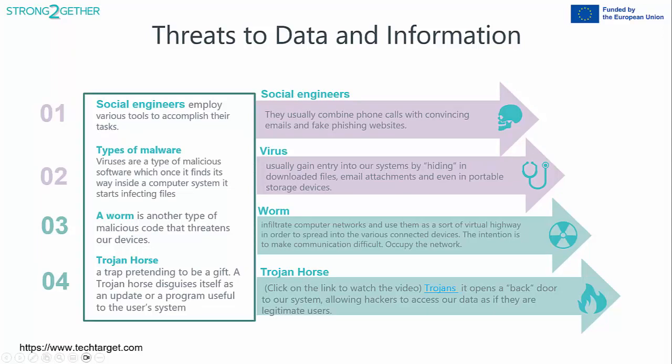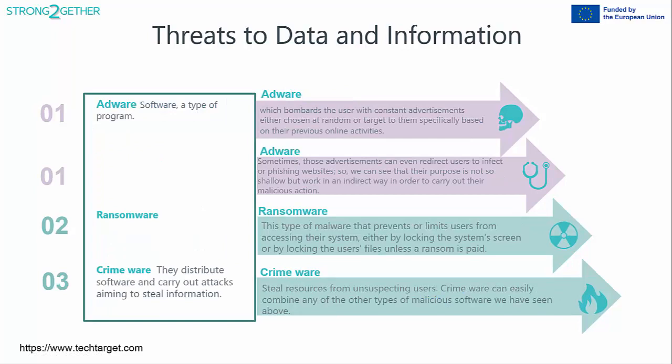Social engineers combine phone calls with convincing emails and fake phishing websites. Types of malware: Viruses are malicious software that, once inside a computer system, start infecting files — they usually gain entry by hiding in downloaded files, email attachments, and portable storage devices. A worm is another type of malicious code that threatens devices. A Trojan horse disguises itself as a useful update or program — it opens a back door to the system, allowing hackers to access data as if they are legitimate users.